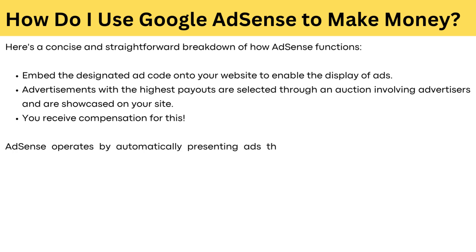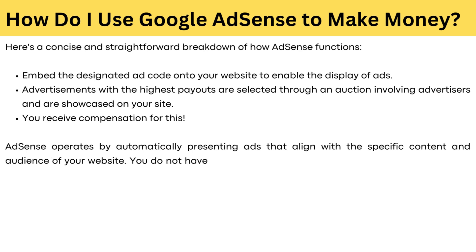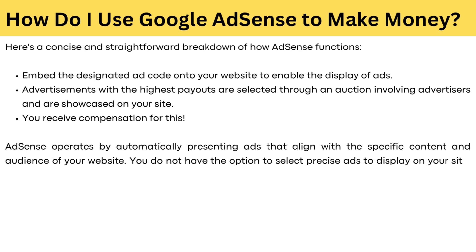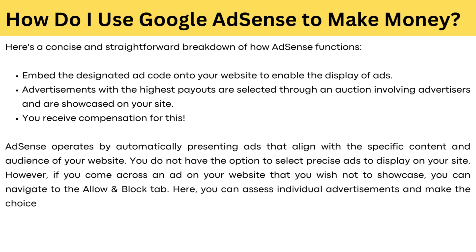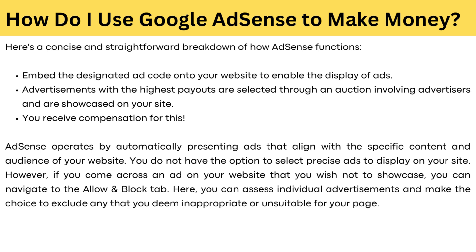AdSense operates by automatically presenting ads that align with specific content and audience on your website. You do not have the option to select precise ads to display. However, if you come across an ad you wish to exclude, you can navigate to the Allow and Block tab, where you can access individual advertisements and choose to exclude any that seem inappropriate or unsuitable for your page.